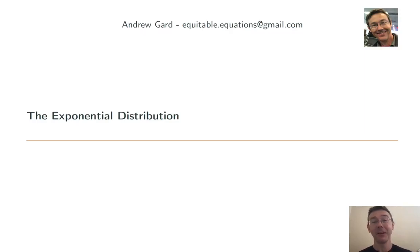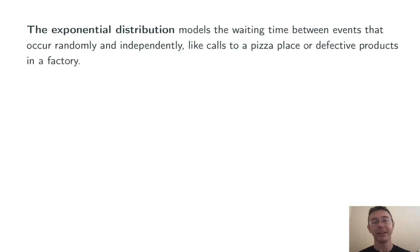Hey everybody. Today we're talking about the exponential distribution. This models waiting times between identical events that occur randomly and independently, like calls to a pizza place or defective products in a factory.